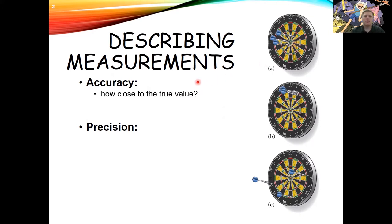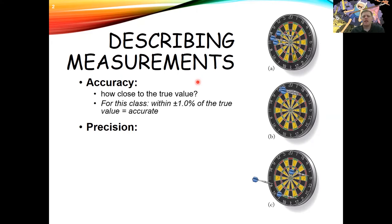The definition of what qualifies as accurate or inaccurate really depends on context — how accurate do you need to be, how accurate can you be. For this class, we'll use a working definition: if a measurement is within plus or minus one percent of the true value, we'll call it accurate.